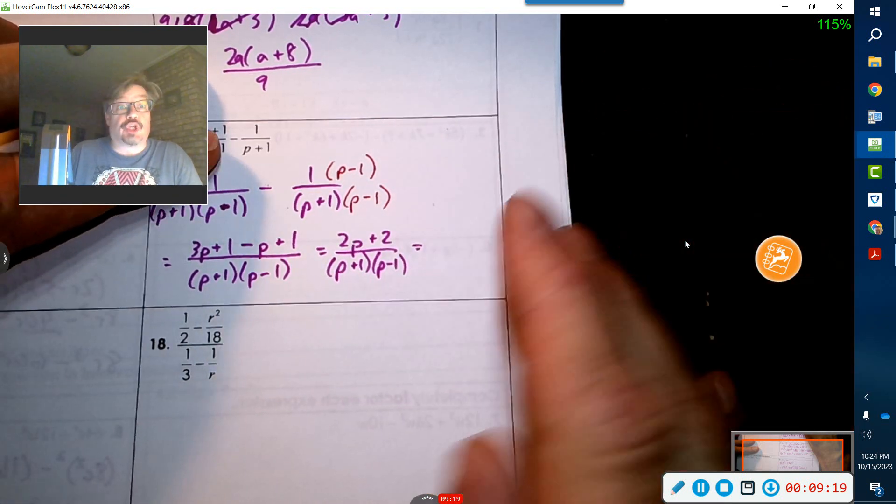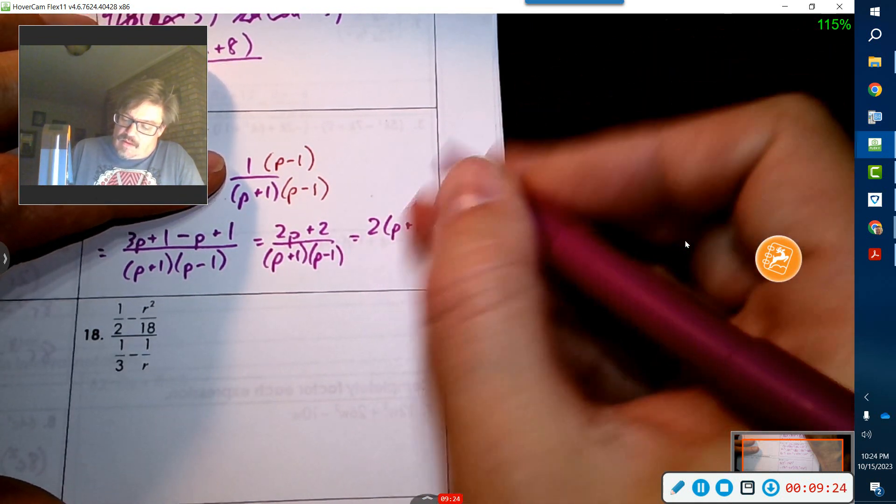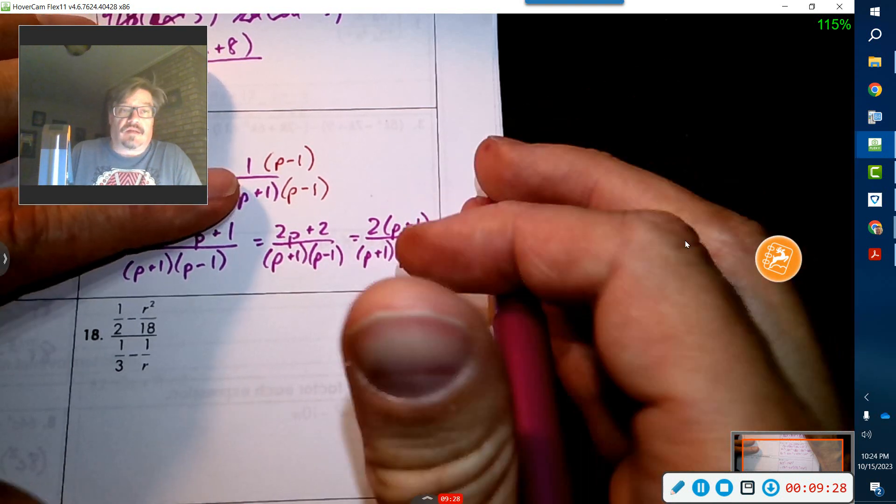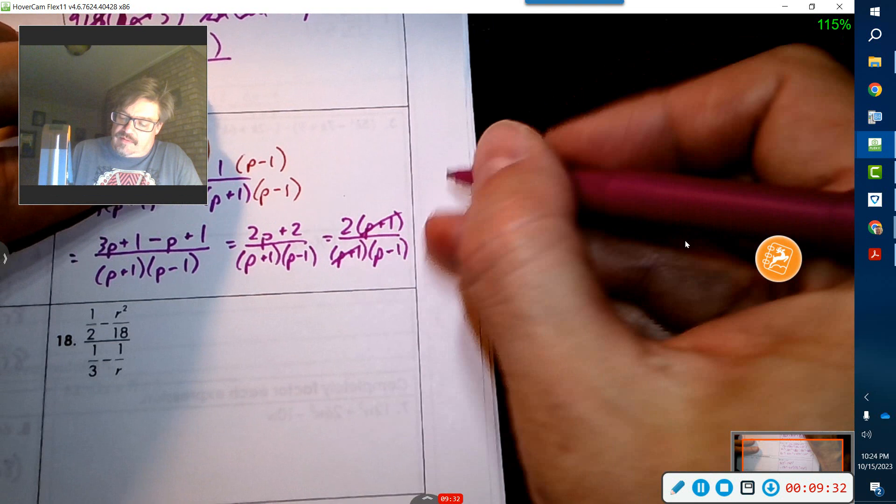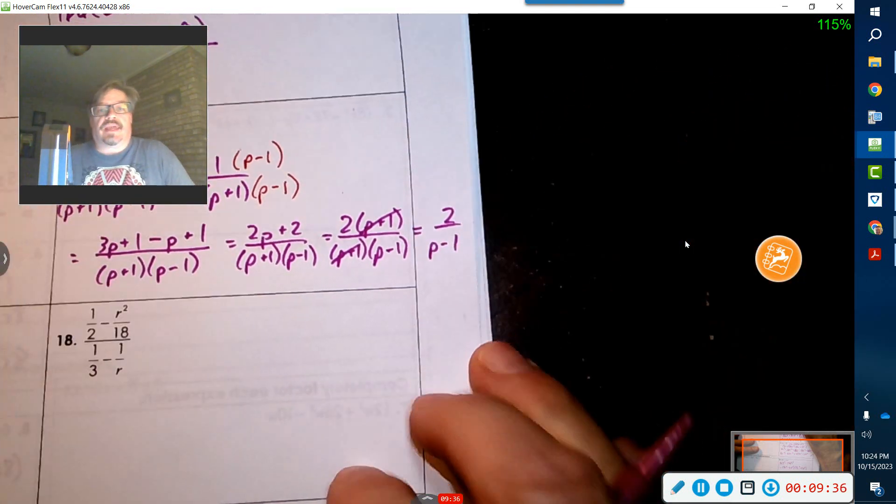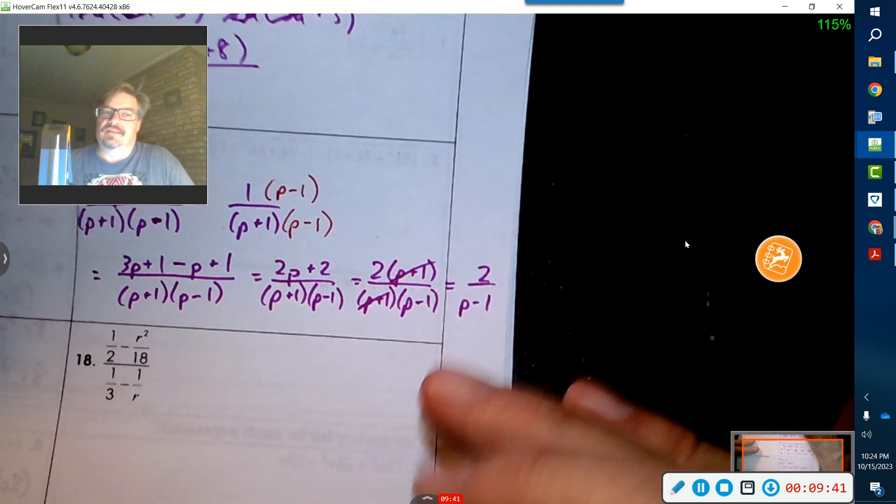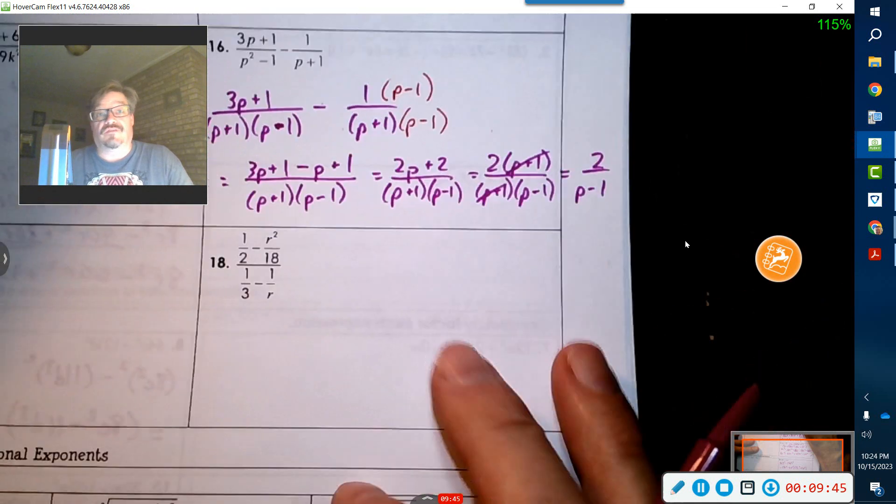That was highly exaggerated excitement. So in case you thought I was for real, that was fake. All right. And looks like those P plus ones could actually cancel out. Oh, no, I was excited. Just kidding. So two over P minus one is your final answer.